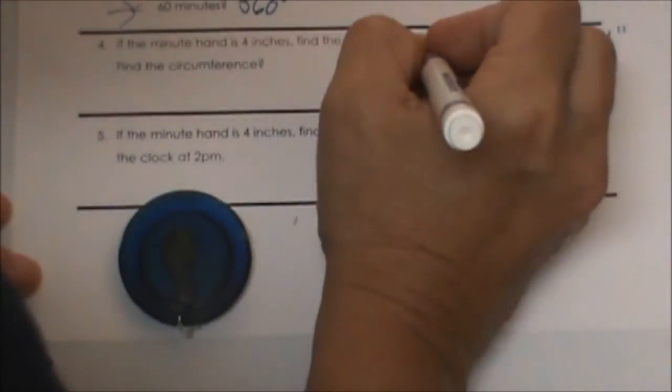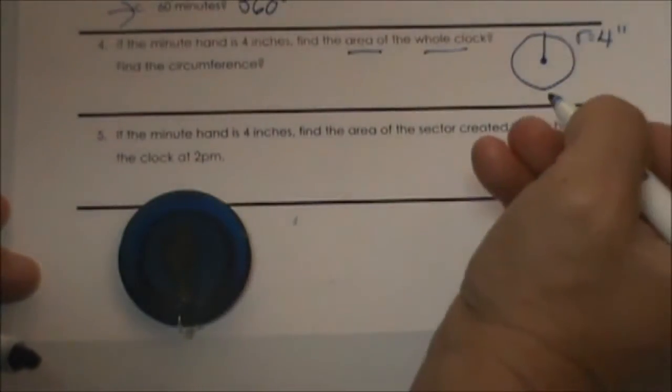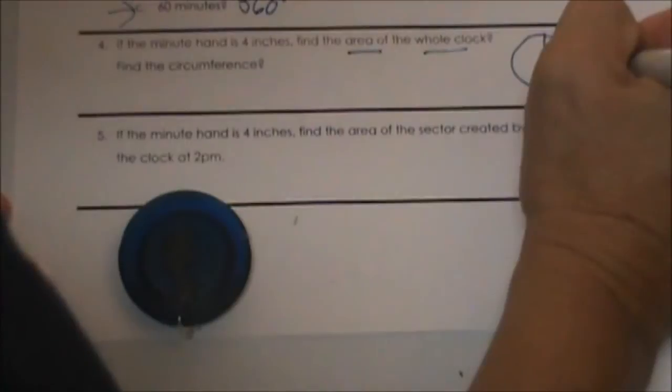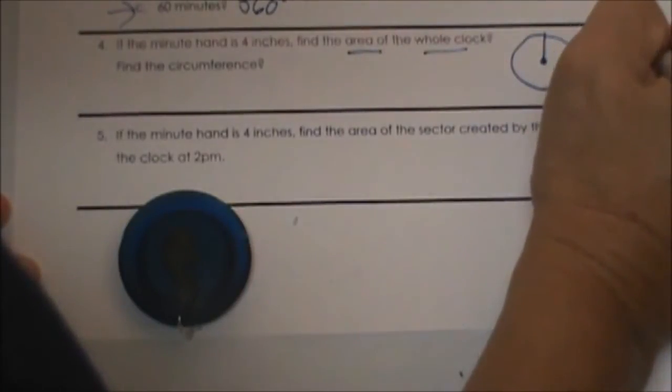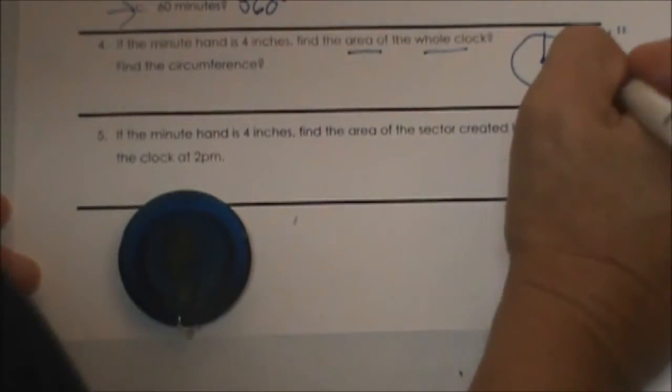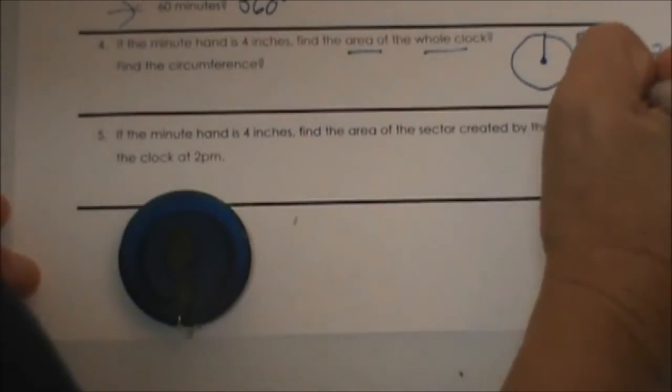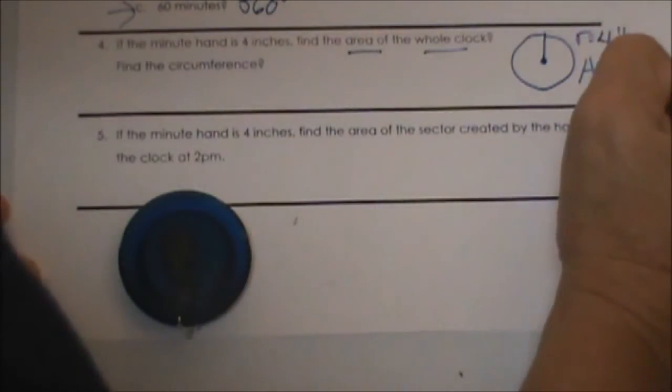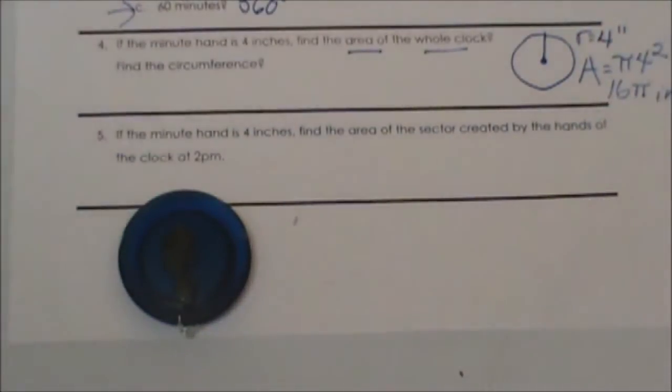What is the area of the whole clock? Area is pi times radius which is 4 squared, so 16π inches squared would be our area.